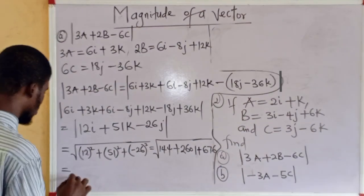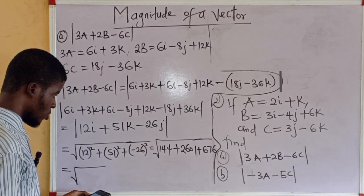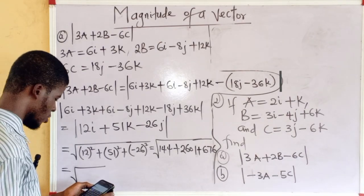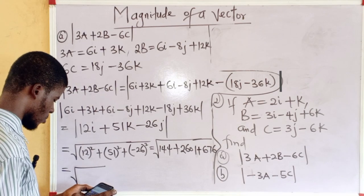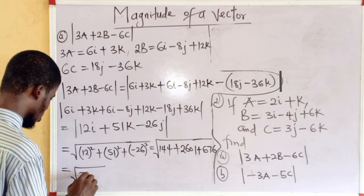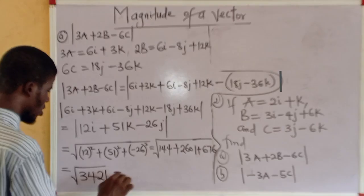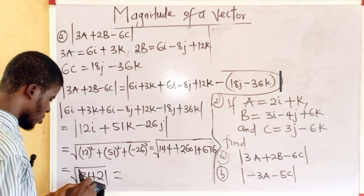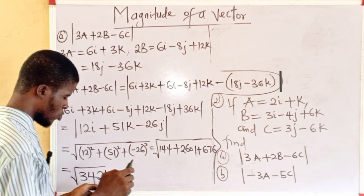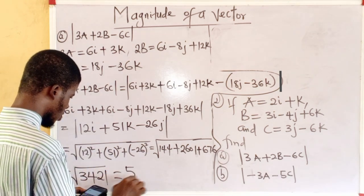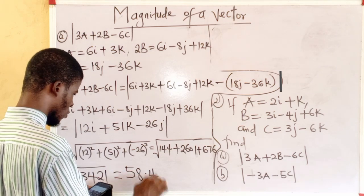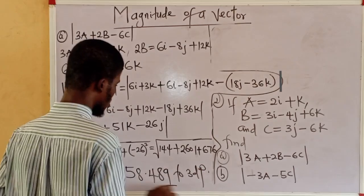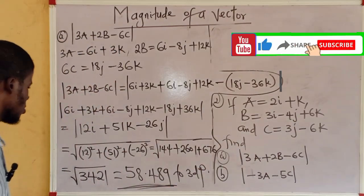Let's add it up. 2,601 plus 144 plus 676 is 3,421. So, what is the square root of this value? The square root of this value is 58.489 to three decimal places. This is the magnitude of the vector to three decimal places.